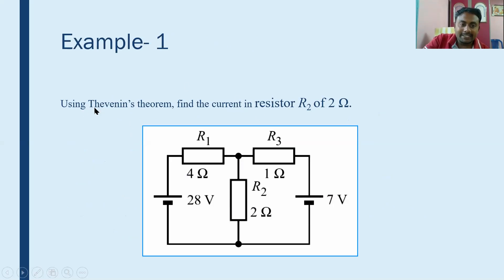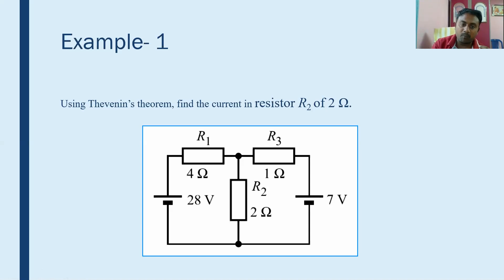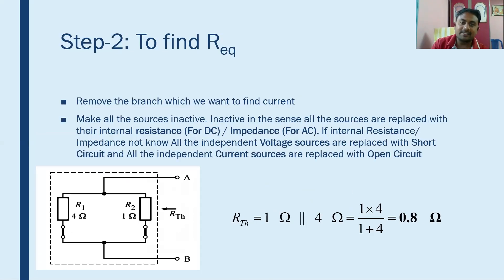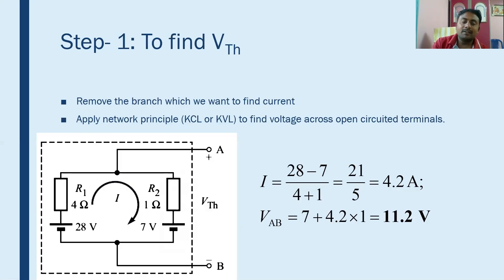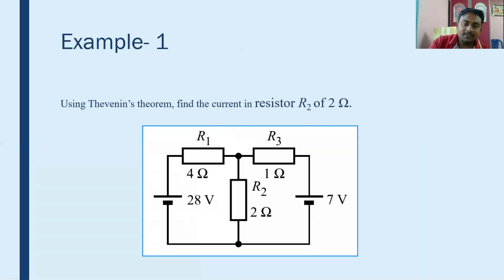So this is an example I consider to solve Thevenin's theorem. The given problem is: find the current through the 2 ohm resistor R2. Our objective is to find the current through this 2 ohm resistor for the given network using Thevenin's theorem. We have to find out VTH, R_equivalent, and IL. I have divided this into three steps: Step 1 — find VTH, Step 2 — find R_equivalent, Step 3 — find IL.